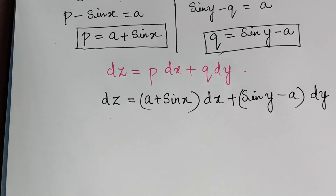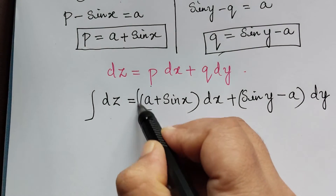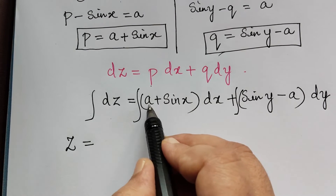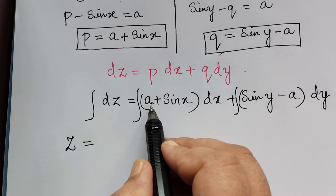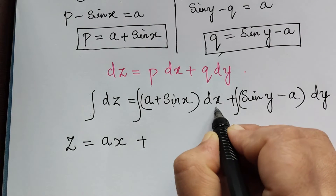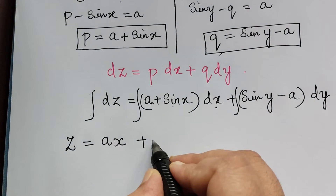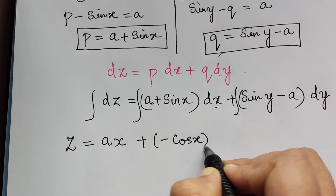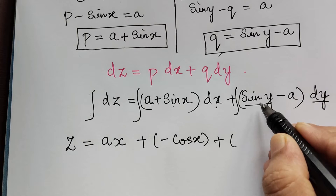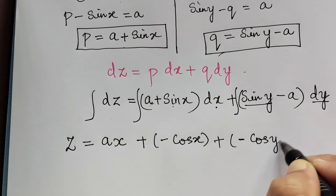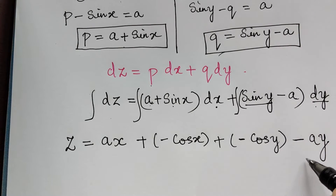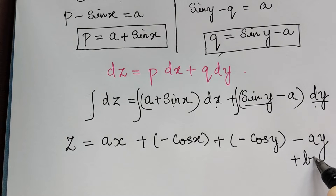Now we integrate on both sides. Integral dz is z, which equals a integrated with respect to x gives ax, sin x integrated gives minus cos x, then integration of sin y dy gives minus cos y, and minus a integrated with respect to y gives minus ay, plus a constant of integration b.